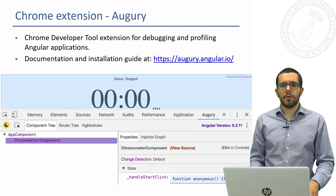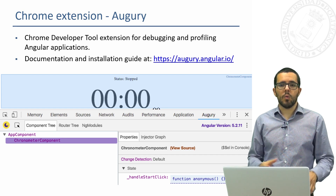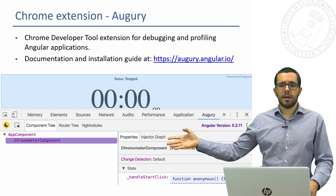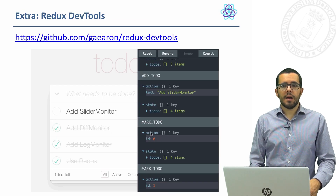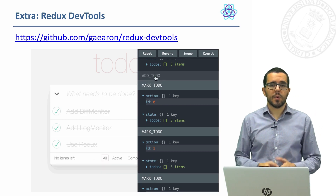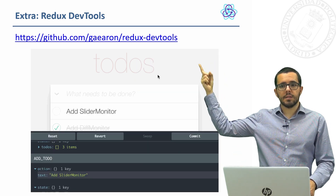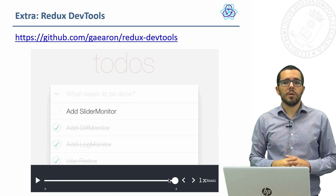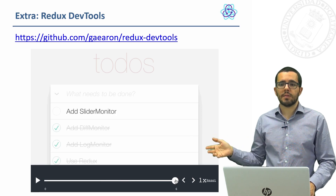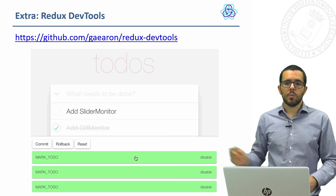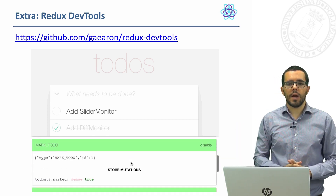For Angular we have another one that is called Augury. It is very similar to the one in React but for Angular — we will see the components and the properties and these kinds of things of our Angular application. And if our app includes Redux we will have another one called Redux DevTools, and with this one we will be able to test the Redux architecture and travel in time, as we can see in this GIF here — going forward and backward in the state of our application.